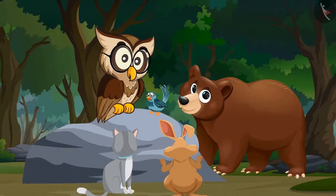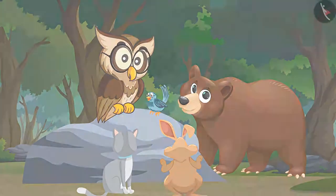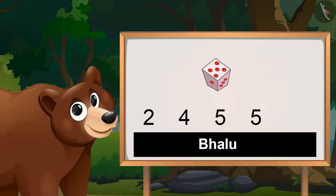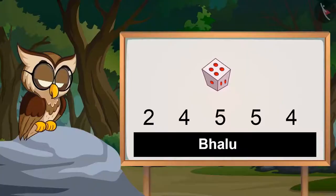Now Bhalo, it's your turn. Okay, two, four, five, five, four. So Bhalo got these numbers on the dice.